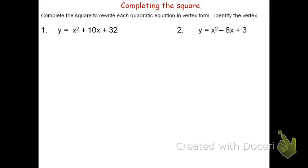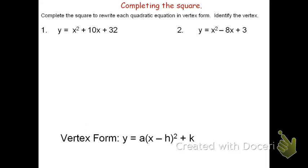This video will review how to use completing the square to determine the vertex form of a quadratic equation. The vertex form of a quadratic equation is y equals a times the quantity x minus h squared plus k, where a is either the stretch factor or dilation factor, h is the horizontal shift, and k is the vertical shift.